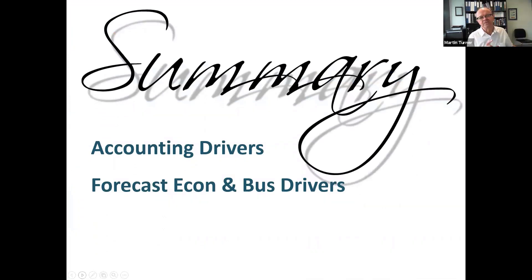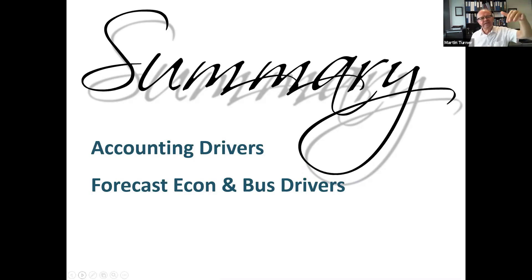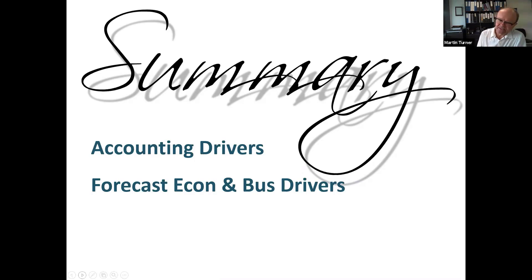What we've looked at is the accounting drivers: return on net operating assets, which equals profit margin times asset turnover; sales and sales growth; net operating assets. These are our key accounting drivers of economic profit and of cash flow. And now we're moving into the economic and business drivers that are driving those accounting drivers — the economic and business realities — and that's what we're going to be forecasting. That's where we're at at this point.